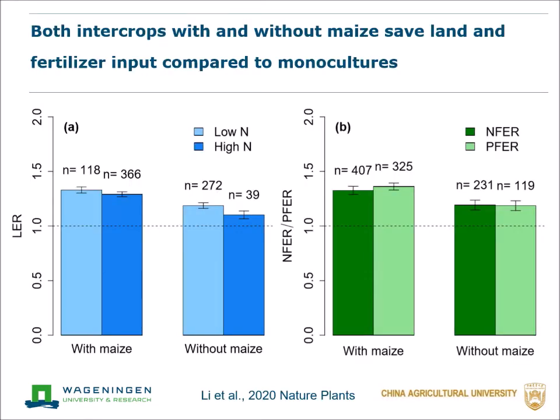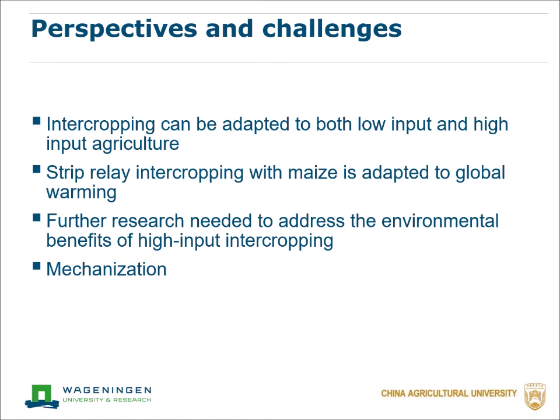Our results also show that both intercropping systems have a large LER, nitrogen fertilizer equivalent ratio, and phosphorus fertilizer equivalent ratio — all larger than one. This means both intercropping systems, with and without maize, save land and fertilizer input compared to monocultures. From our study, we can see that intercropping can be adapted to both low-input and high-input agriculture, and strip relay intercropping with maize is adapted to global warming.